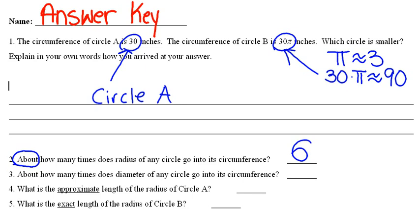Question number three, about how many times does diameter of any circle go into circumference? The formula for circumference is pi D. That means that diameter goes into circumference pi times. Pi is approximately 3.